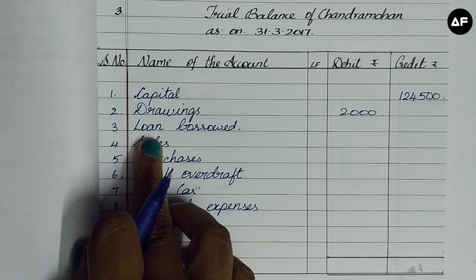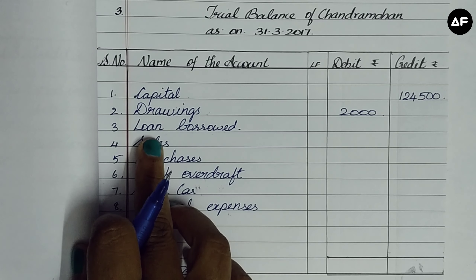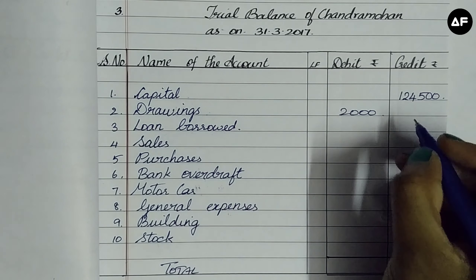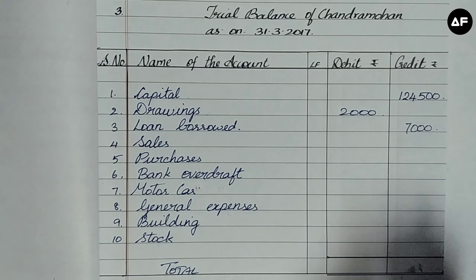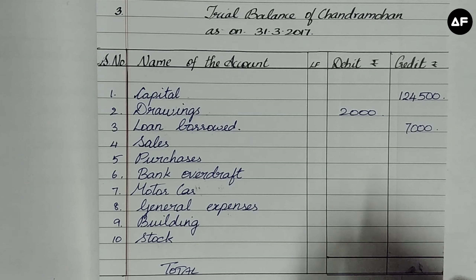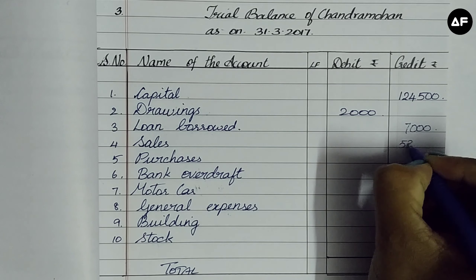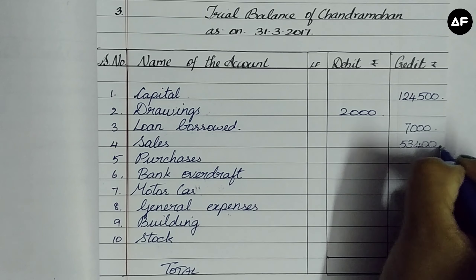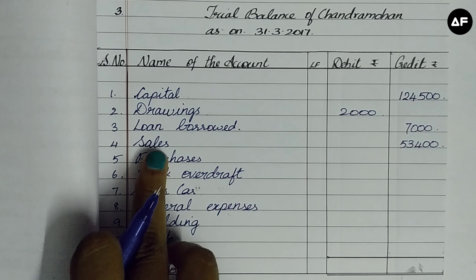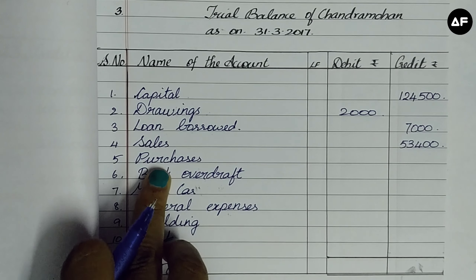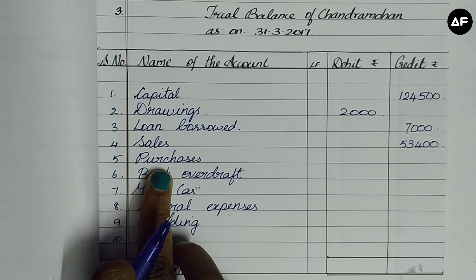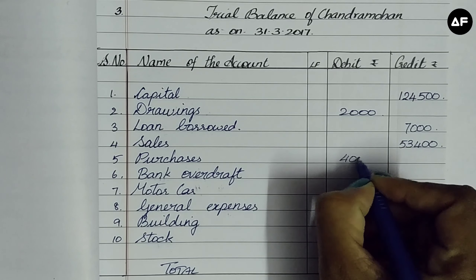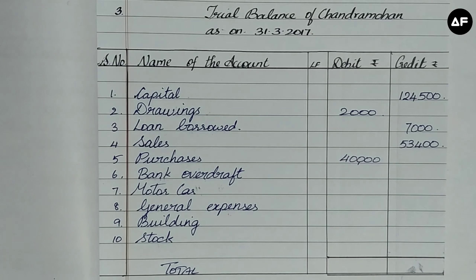Next is loan borrowed — since a loan is repayable, the 7,000 is going to go into the credit column. Next is sales, which as discussed previously, 53,400 goes into the credit. Purchases have the opposite effect to sales, so purchases of 40,000 is debited.